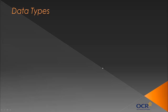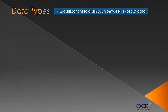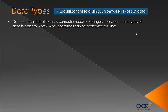We're going to talk about data types - this is an absolutely fundamental idea. It's slightly difficult to explain, but really what data types are is they're classifications to distinguish between types of data. The reason we have data types is that there are lots of forms of data: there's words, letters, individual letters, there's numbers. A computer needs to be able to distinguish between these types of data in order to know what operations can be performed on what. We want to look at five main types of data types.